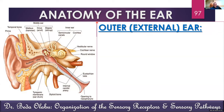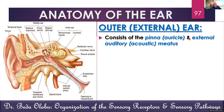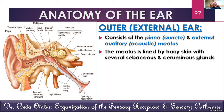Let's begin with the outer ear, also called the external ear. It consists of two things: the pinna of the ear, and the external auditory meatus — which you can also call the external acoustic meatus or the auditory canal. The pinna itself is basically made up of elastic cartilage on most parts of it, but the lower part doesn't have cartilage, and that cartilage is lined by skin.